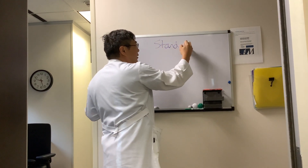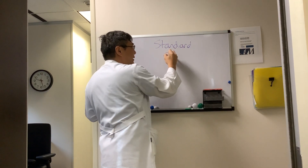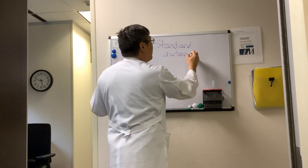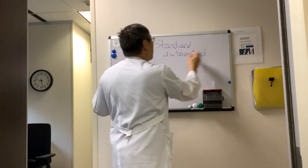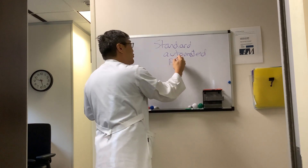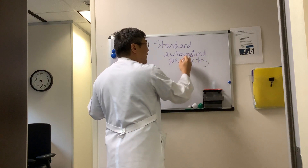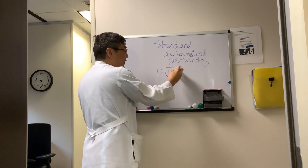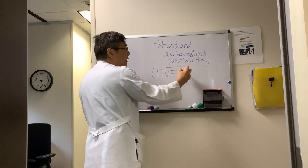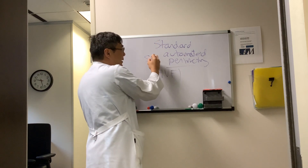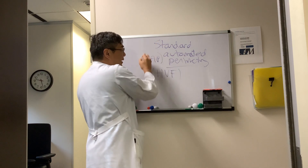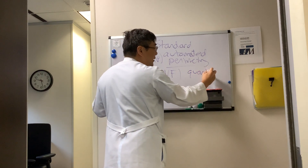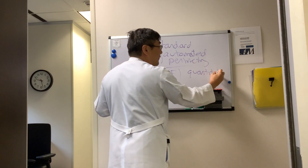In standard automated perimetry, which is a test of your visual field — in our clinic we are using the Humphrey visual field — we get a quantitative assessment of the hill of vision.